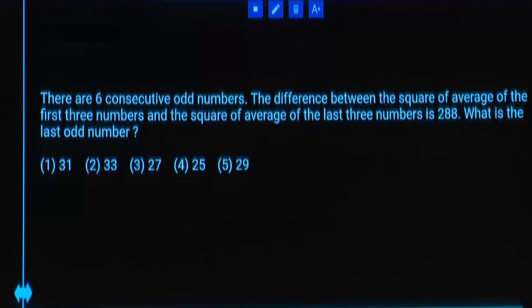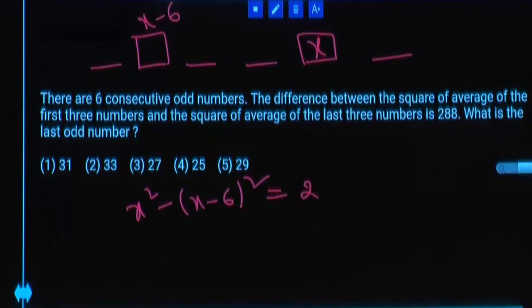There are 6 consecutive odd numbers. Difference between the square of the average of first 3 numbers and the square of the average of last 3 numbers is 288. What is the last odd number? 1, 2, 3, 4, 5, 6. Average of first 3 numbers in the sense this number. Average of last 3 numbers in the sense this one. If it is x, this becomes x minus 6 only.